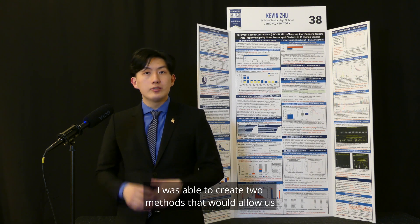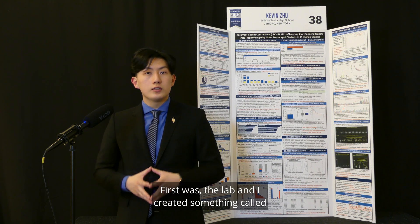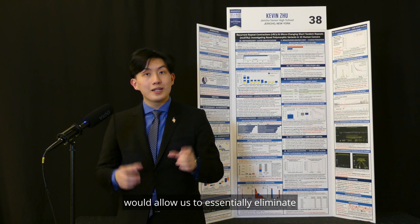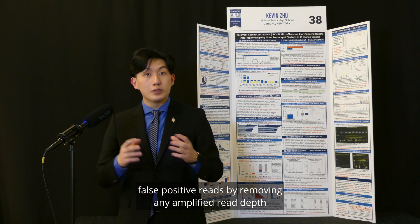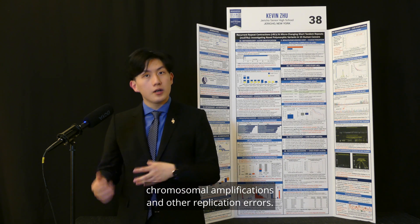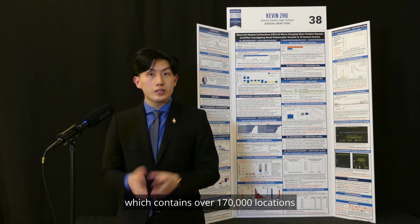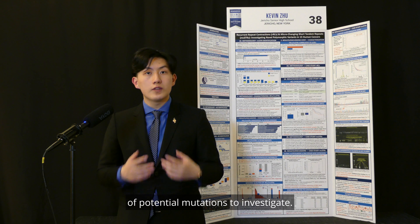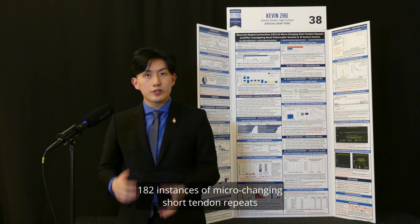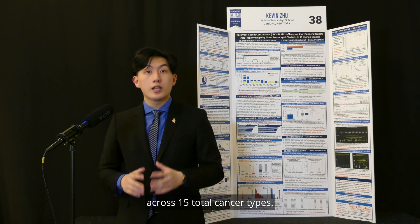With my lab, I was able to create two methods to potentially identify these mutations better. First, we created something called local read normalization, which would allow us to essentially eliminate false positive reads by removing amplified read depth false positives coming from chromosomal amplifications and other replication errors. Second, we tested the use of something called the active STRs catalog, which contains over 170,000 locations of potential mutations to investigate. With these two methods, I was able to identify 182 instances of microchanging short tandem repeats and 120 instances of recurrent repeat contractions across 15 total cancer types.